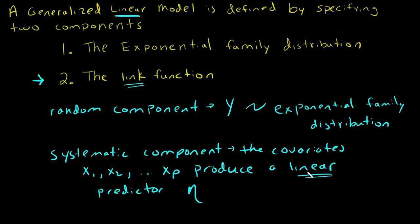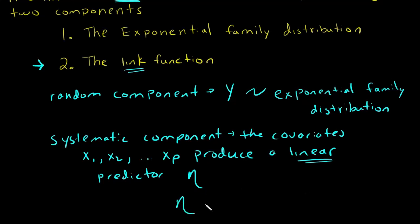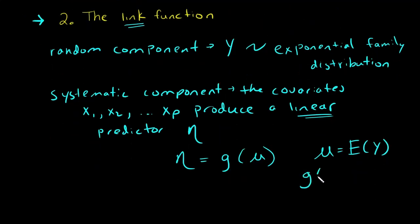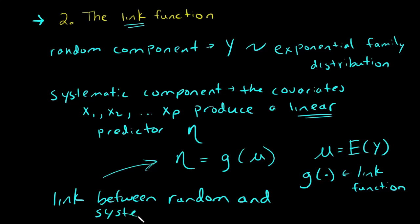So nu equals g of mu. Mu, this Greek letter mu, is just our mean of the response variable. And this g function is our link function. So this is the link between random and systematic components. That's why it's called a link function.